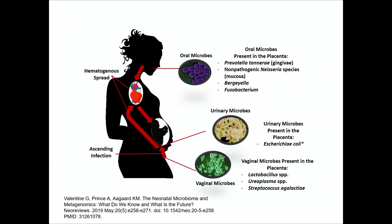The thought is that the oral microbiota seeds the human placenta during episodes of transient bacteremia. Every time we brush our teeth, we get transient bacteremia — this is not uncommon, it happens to everyone.